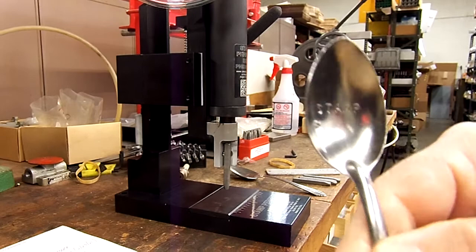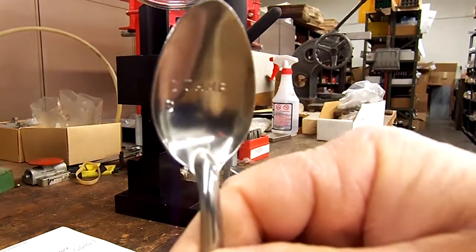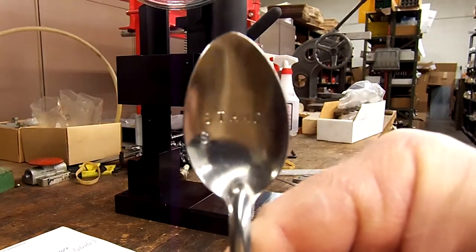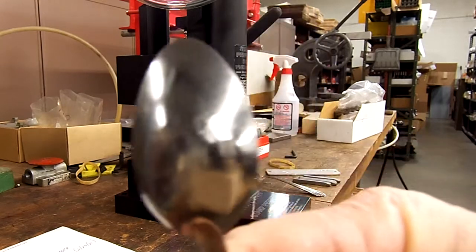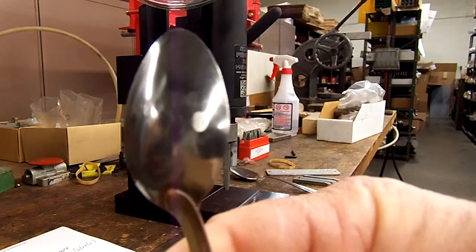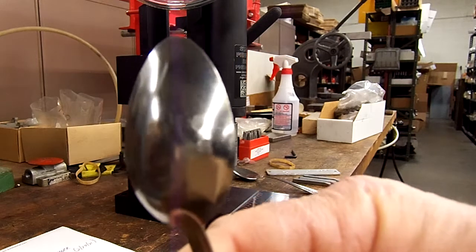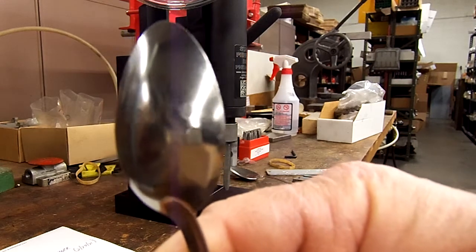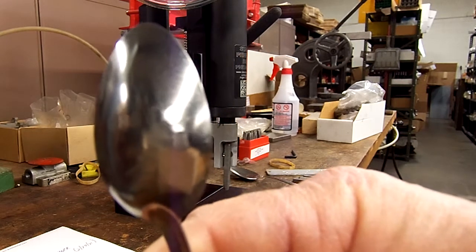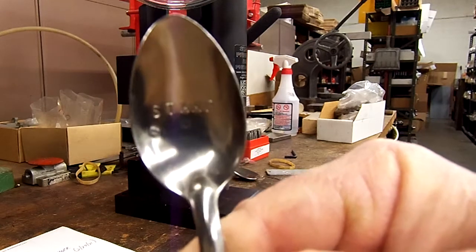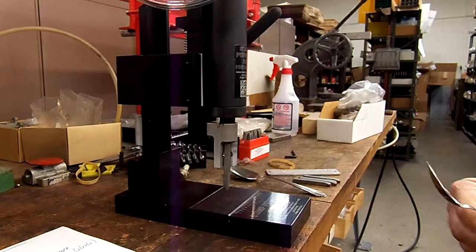Now already you can kind of see the difference in the impression of the S. You'll probably see it more so on the back of the spoon. You'll see that right there where I just hit it as compared to the SSP that I hit above it. So I'm going to continue to mark a stamp underneath the other one.